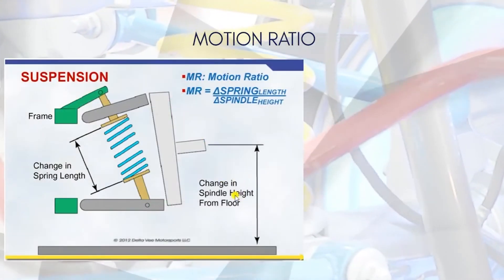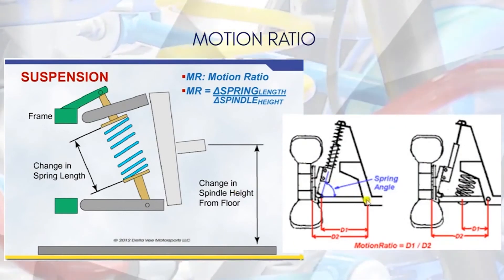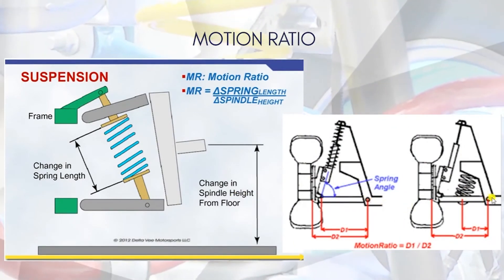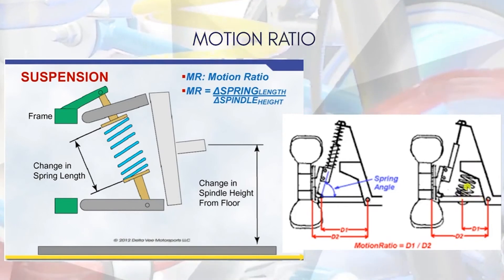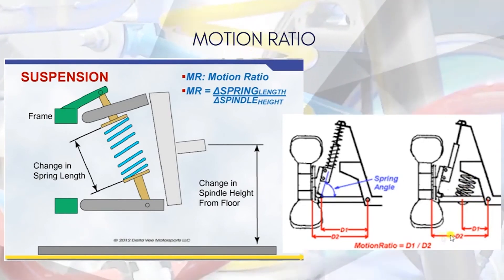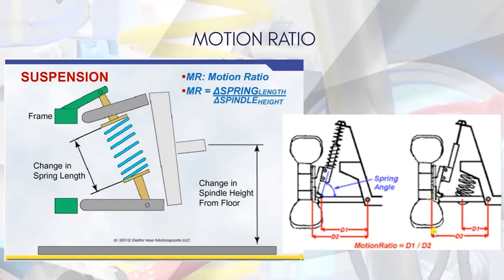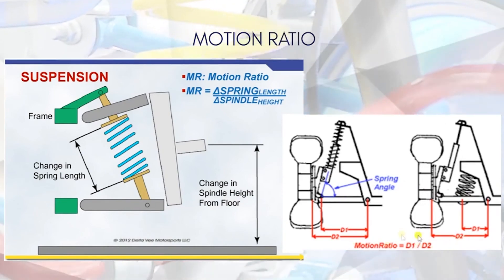You divide the distance from the pivot point—whatever the length along which your spring is attached, that distance—upon the entire wheel center. What that distance is, you divide d1 by d2 to get the motion ratio as well.